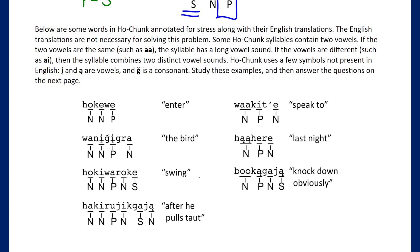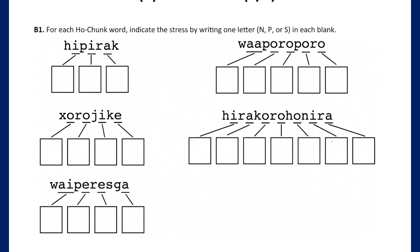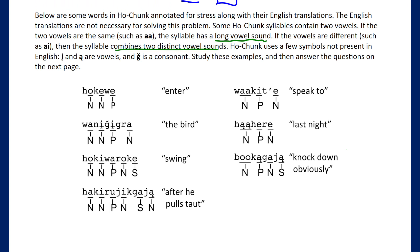If two vowels are the same, such as 'aa,' the syllable has a long vowel sound. If the vowels are different, the syllable combines the two distinct vowel sounds. The language uses a few symbols not present in English — there are two vowels, and 'j' is likely a consonant. We need to figure out the pattern, because vowel length — whether you have two vowels versus one — seems like it's going to make a difference.